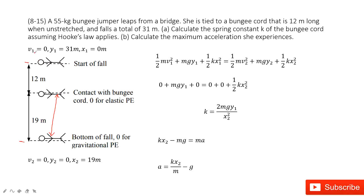The initial state has velocity v1 equals 0, y1 is 31 meters. We take the final position as a reference point. The x1, the extension for the bungee, is 0.